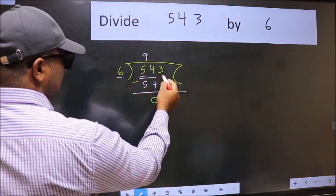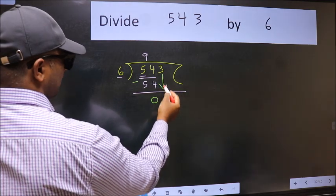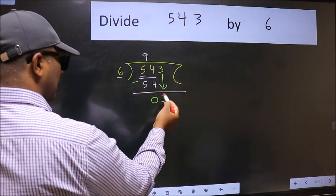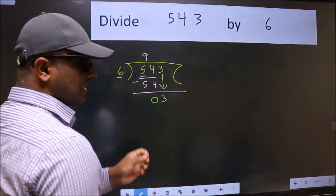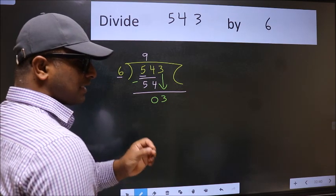After this, bring down the beside number. So 3 down. After this step, the mistake happens. And the mistake is this.